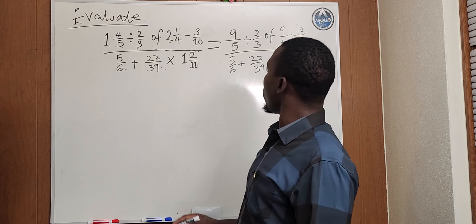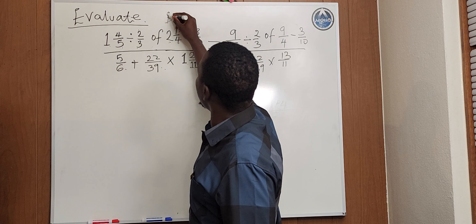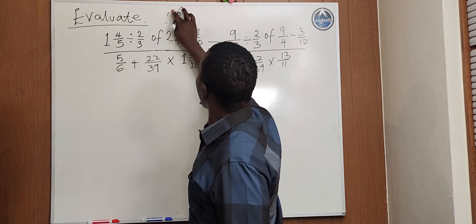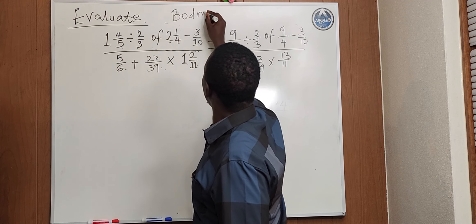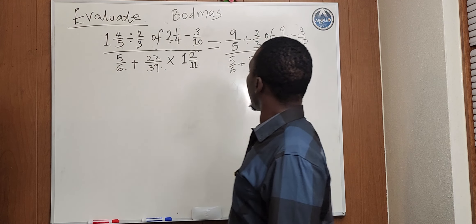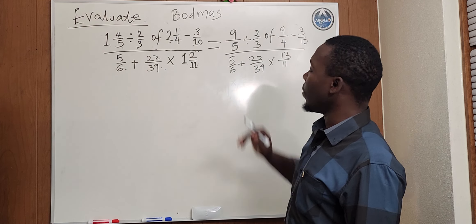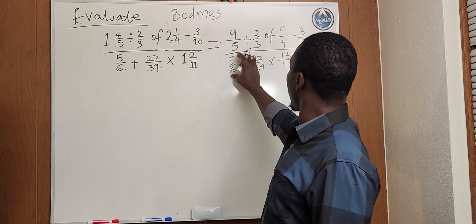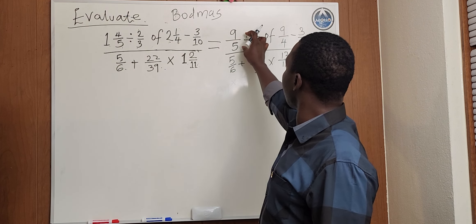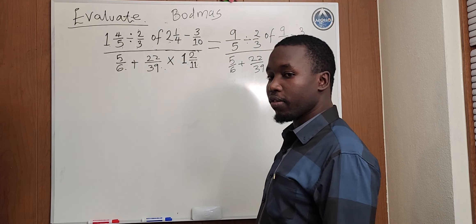We are going to employ the BODMAS for this question. First, let's start with the numerator. We solve the numerator, then solve the denominator. The answer we get at the numerator and the denominator we divide them will give us the final answer.